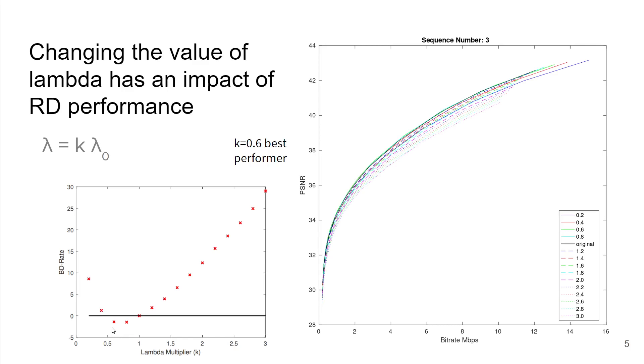This was exhaustive because in order to get each one of these points, we needed to encode the video for multiple operating points to generate an RD curve and then calculate the BD rate between the curve and when k equals 1, which you'll see there's no improvement because it's the same.